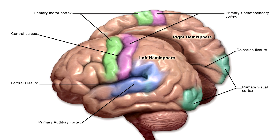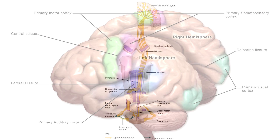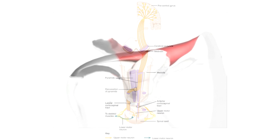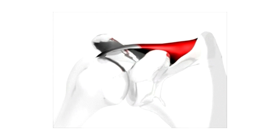In front of the sensory cortex lies the motor cortex, which in cooperation with the rest of the brain may contribute to giving orders to your muscles, causing movement.